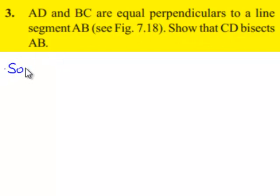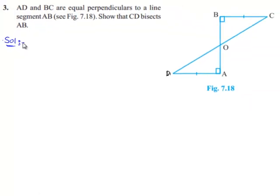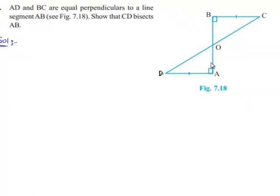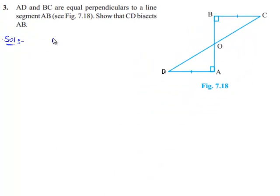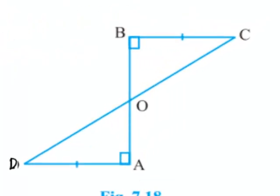Now, moving on to the solution. It is given that AD and BC are equal perpendiculars, that is AD is equal to BC as given in the problem, and here also says that they are perpendicular.